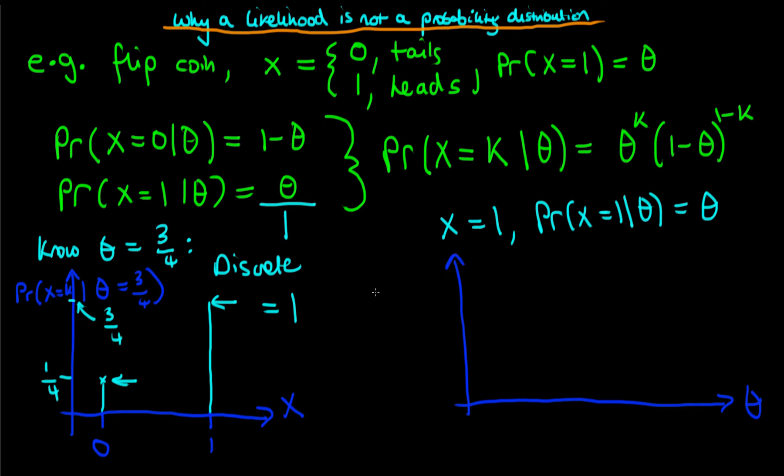On the y-axis here, we have the probability that x equals one given theta. And then on the x-axis, we just have theta here, or the horizontal axis I should rather say, to avoid confusion with the random variable x. We're going to draw this between theta is zero and theta is one. We obtain a straight line, which looks something like that. The height here on the y-axis when theta is one is one. So we get a curve that looks something like this, and we note that this is a continuous curve.